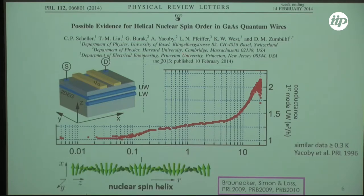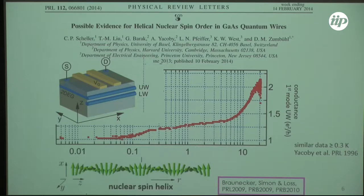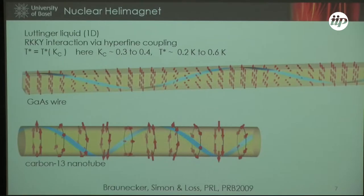In this paper we go through a number of possible explanations, but the only one we cannot rule out is a situation where the nuclear spin system orders into a helix. This creates a partially gapped state where one of the spin modes is not transmitted anymore. There's a theory that goes along with this from a few years before, and the high ordering temperatures in this case are motivated by a strongly interacting 1D system in the Luttinger liquid.